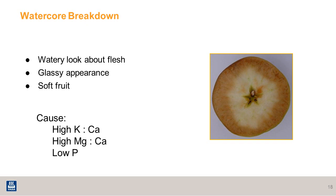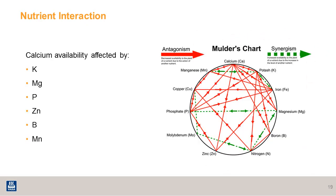A similar relationship was found with water core breakdown in apples. So far, I've shown you the impact of ratios between different nutrients and calcium. Here's a good chart called the Mulder's interaction chart. The red line indicates where antagonism occurs, and it seems like there is no nutrient that shows synergism with calcium. Nutrients like potassium, magnesium, phosphorus, zinc, boron, and manganese — if there is too much of any of them — will be antagonistic to calcium uptake into the fruit.